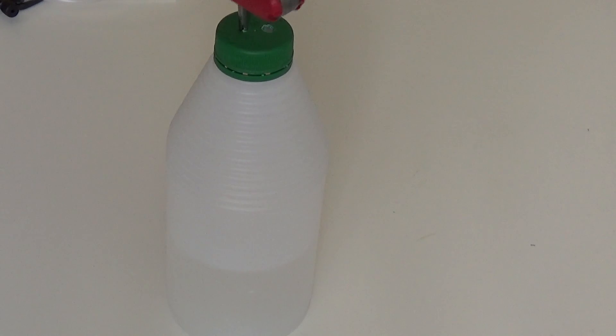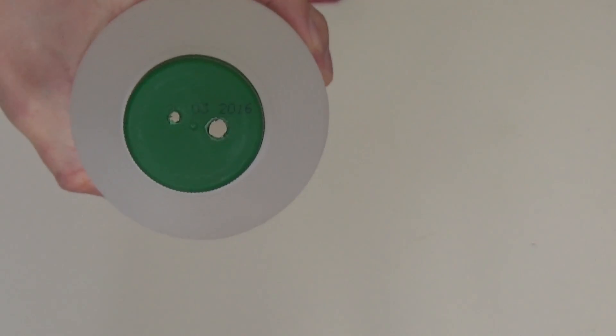Now you need to make two holes in the bottle's cap. I used a screwdriver to do this. Try to make the hole big enough for the silicone tube to fit snugly.